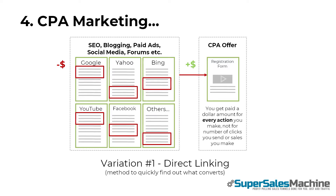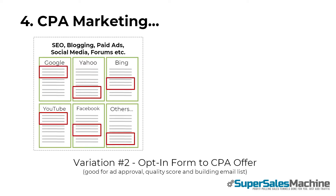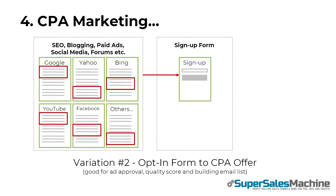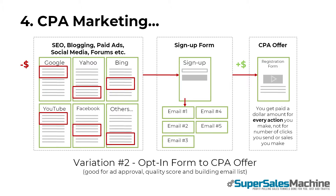However, some networks don't allow you to do direct linking, so here's a variation of this model. You generate traffic like before, then send them directly to your own website with a sign up form to build an email list. You then redirect your visitor to the CPA offer, and get paid when the action is complete. With those new subscribers, you can now send out emails to remind them to complete the registration form for the CPA offer, and then also promote other CPA offers over time, or even sell affiliate products.